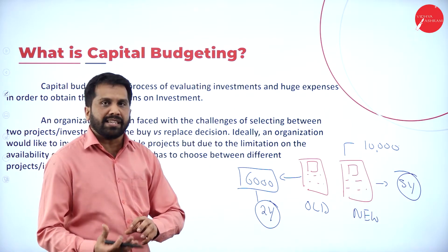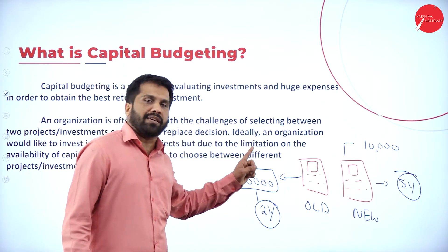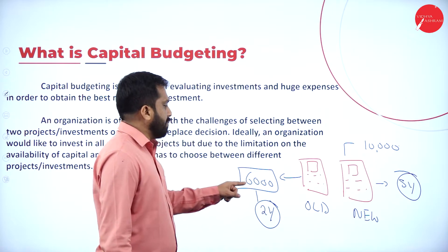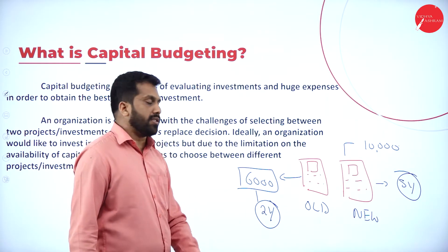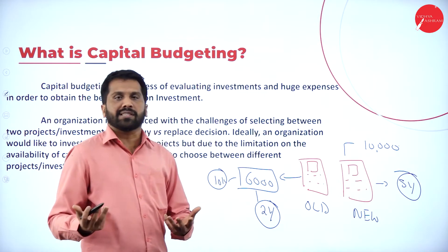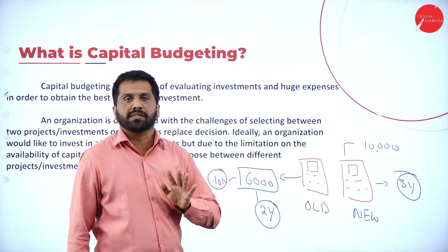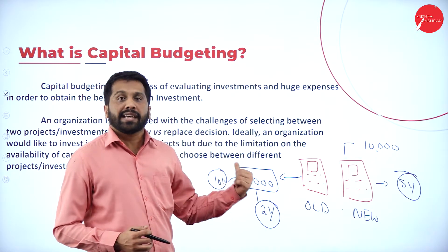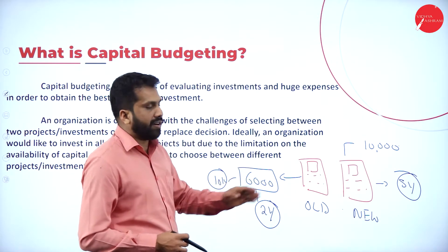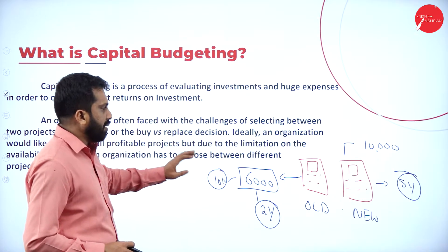Understanding and taking a decision — whether you should go for this option or that option — is called capital budgeting. If you repair the old mobile for 6,000, after 2 years you still need to spend 10,000, making it 16,000 total. Whereas the new mobile costs 10,000 and lasts 5 years. These calculations — whether to use the existing machine or go for a new one — are what capital budgeting is about.